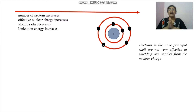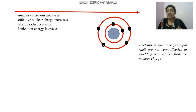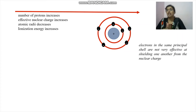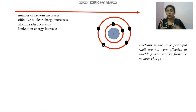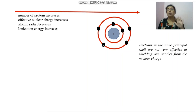As effective nuclear charge increases, the outermost electrons are more strongly attracted, causing the atomic radius to decrease. Since the outer electrons are strongly held to the nucleus, it becomes difficult to remove them, so ionization energy increases. Moving left to right across a period, ionization energy increases and atomic radius decreases.